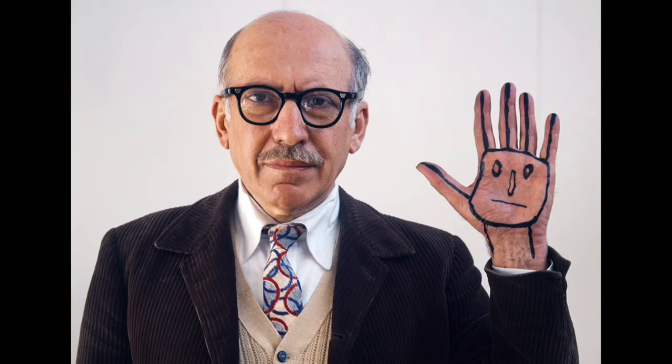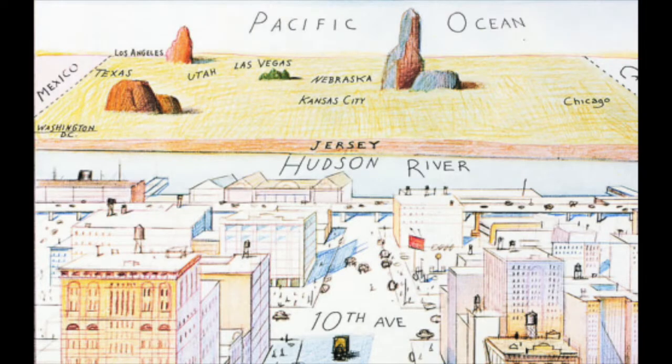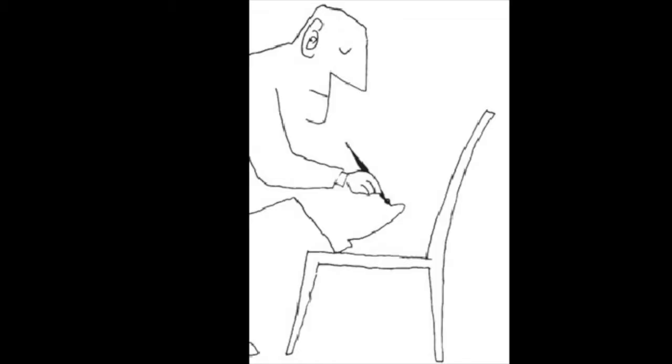This is Saul Steinberg. He was a Romanian-born artist who moved to America around the time of World War II, like so many other people, and he was an illustrator. He made cartoons for the New Yorker and other publications, and he also exhibited his artwork in various galleries around the world.